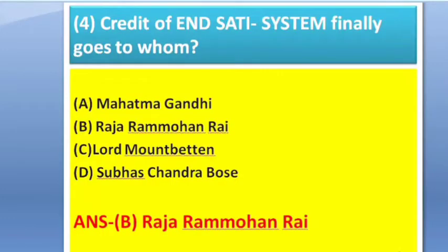Question 4: Credit of the 'in-aid system' finally goes to whom? Options: A — Mahatma Gandhi, B — Raja Ram Mohan Roy, C — Lord Mountbatten, D — Subhash Chandra Bose. The answer is option B — Raja Ram Mohan Roy. This question has appeared in SSC and Railways exams before.